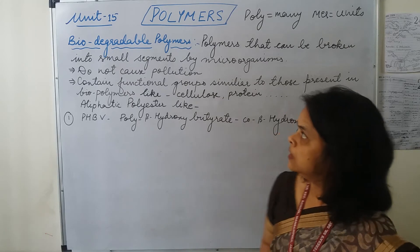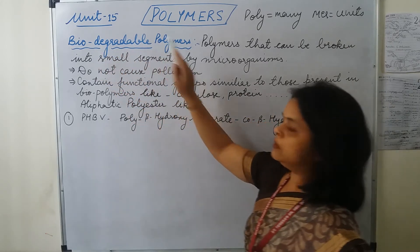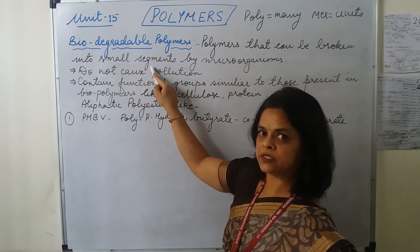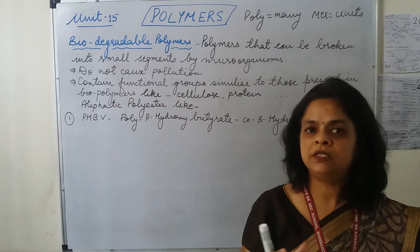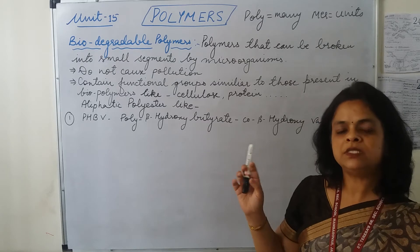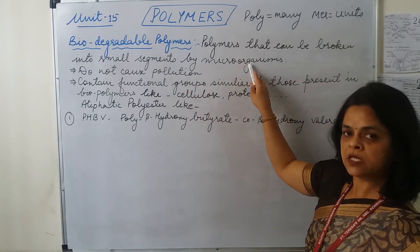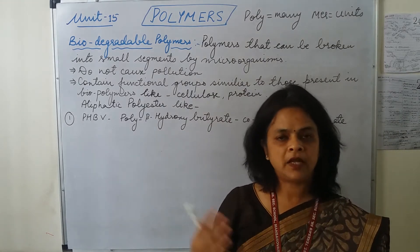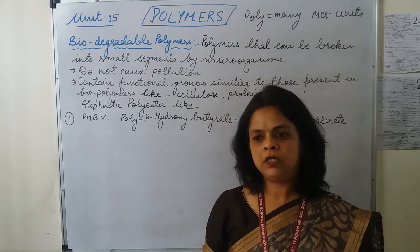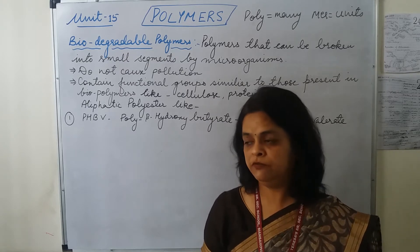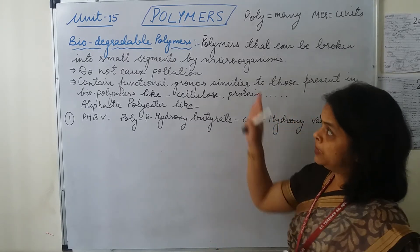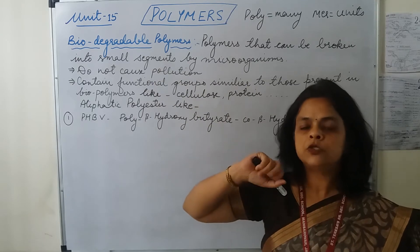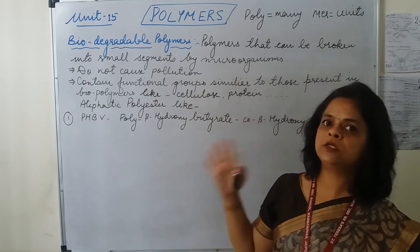Biodegradable polymers are polymers that can be broken down into small fragments or small segments. This means they can be decomposed by microorganisms, which produce certain enzymes that catalyze reactions such as oxidation, decomposition, or hydrolysis. Because they can be decomposed, they do not cause pollution and environmental quality doesn't get degraded.